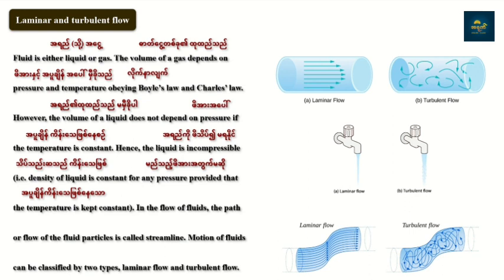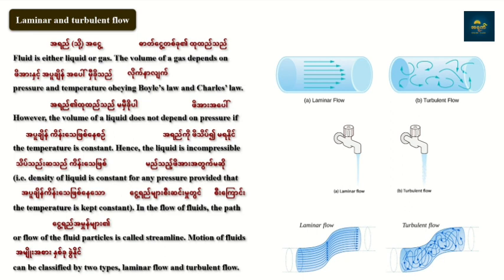In the flow of fluids, the path of a fluid particle is called a streamline. The streamline describes the direction of motion of the flow. The movement of the block of fluid follows this streamline direction.